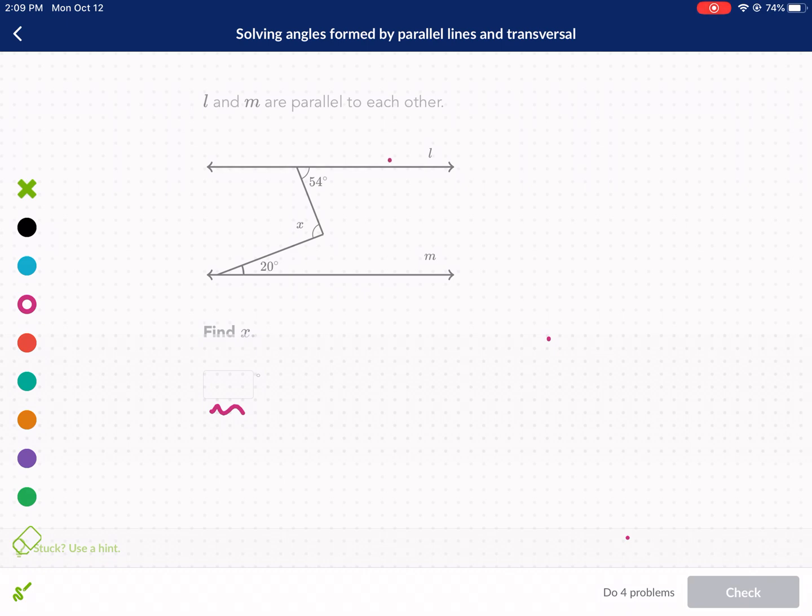We have two parallel lines here. So really what we should add are these little carrots, as I like to call them, that means that they're parallel. Now, one of the rules we know about transversal lines is that we have a transversal. That means a line going through two or more lines. That means that alternate interior angles are going to be equal.